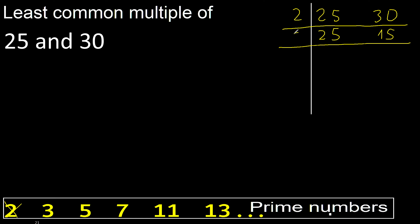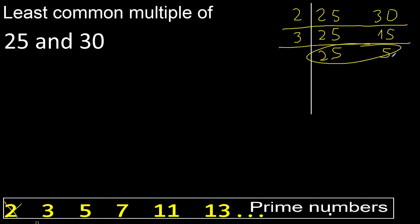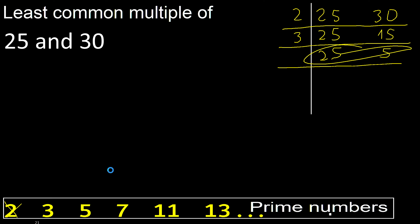Can be divided by 3. Yes. 15 divided by 3 is 5. 25 cannot be divided by 3, therefore equal. Cannot be divided by 3.